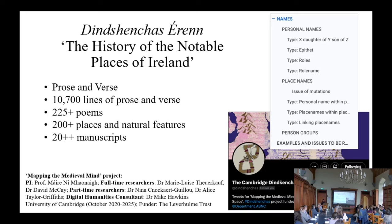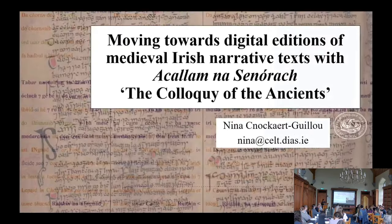Tagging personal and place names in the Acallam would thus enhance the searchability of the text significantly, and a consensus between both projects would also ensure a high degree of interoperability. By making the markup policies, code, and data open access and free to reuse, this work may then be used by linguists, historians, and other researchers for further textual tagging, and ensure the work's longevity.